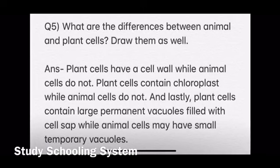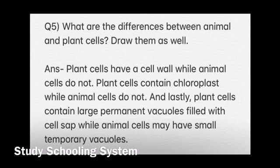Your last question is: what are the differences between animal and plant cells? Draw them as well. The answer is: plant cells have a cell wall while animal cells do not. Plant cells contain chlorophyll while animal cells do not. And lastly, plant cells contain large permanent vacuoles filled with cell sap, while animal cells may have small temporary vacuoles. That is pretty self-explanatory.